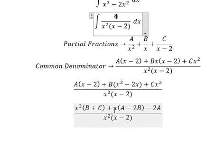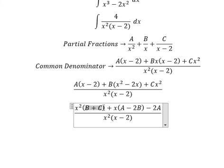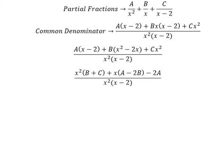four. We don't have x and x squared, so B plus C and A minus 2B equals zero. And now we create the system of equations.